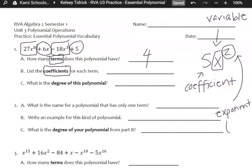It will also tell us the degree of polynomials. But whenever it's talking about the coefficient, it's the big number in front of the variable before we get to the variable. So our coefficients would be 27, 6, and negative 18. 5 in this case is not a coefficient because it doesn't have a variable after it.